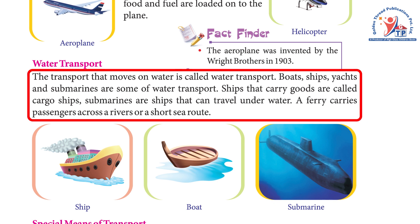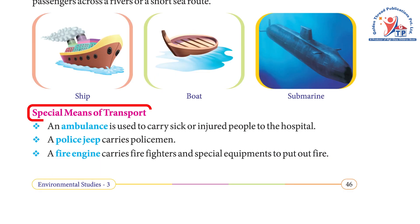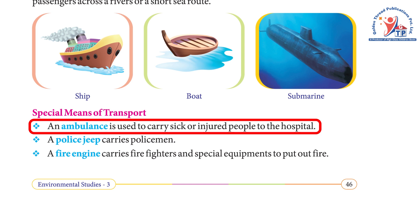Water transport: Transport that moves on water is called water transport. Boats, ships, yachts, and submarines are some forms of water transport. Ships that carry goods are called cargo ships. Submarines are ships that can travel underwater. A ferry carries passengers across a river or along a short sea route.